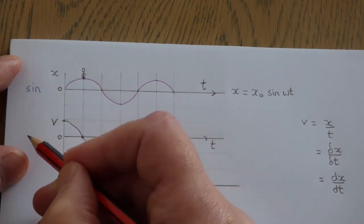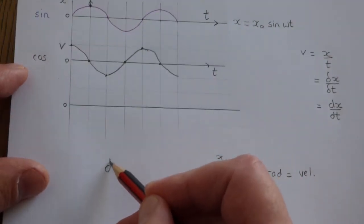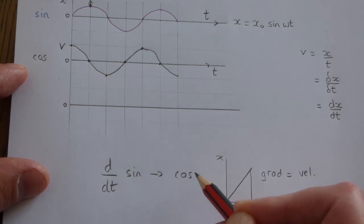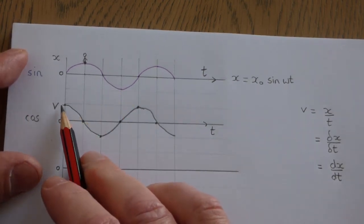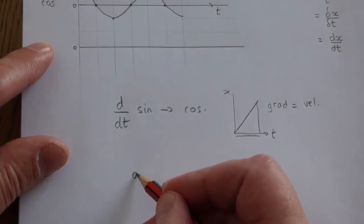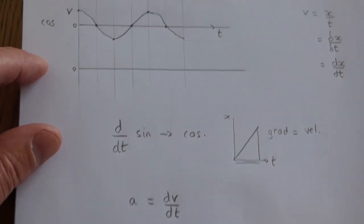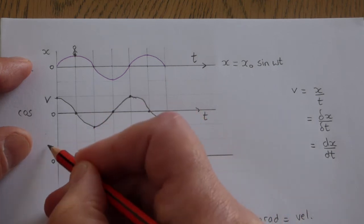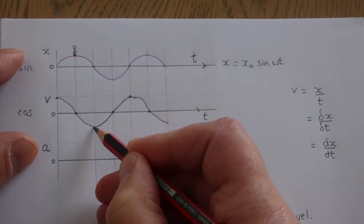The graph we get is a cosine curve. So you could argue that if you differentiate sine, you turn it into a cosine curve — and in maths you're taught that differentiating a sine curve gives a cosine curve. We can see that makes sense as a gradient-finding process. We can also differentiate the velocity-time graph because acceleration is the rate of change of velocity — a change in velocity divided by a change in time. So we apply the same argument to get the acceleration graph.